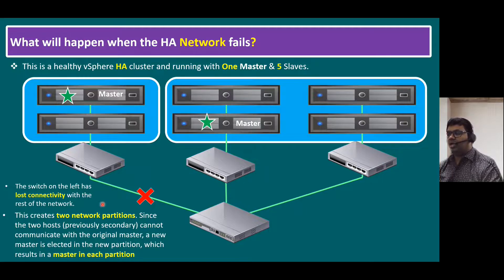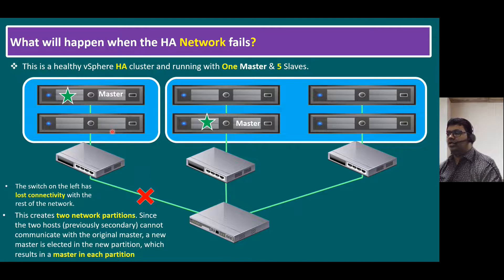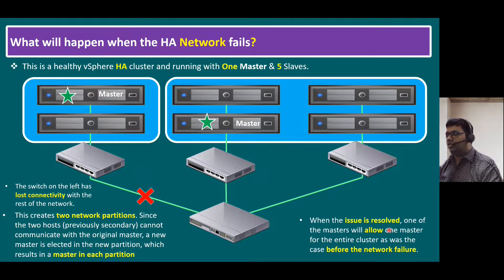After some time, our network is re-established. During the network failure scenario, remember that we have to coordinate with the network team — we need to work together to resolve this issue. The network team will help us bring the network connection back up. Once the network connection is up, as per vSphere HA concept, it is not recommended to maintain two masters, so it will maintain only one master. When the issue is resolved, one of the masters will be removed, leaving one master for the entire cluster, as was the case before the network failure.